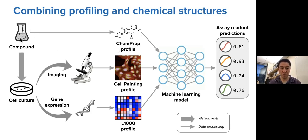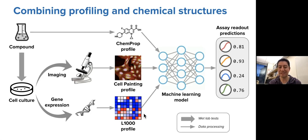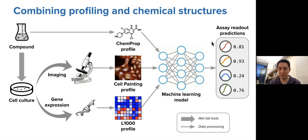To recap: we have compounds which we can apply to cell cultures to observe using the microscope via cell painting. We can also measure phenotypic activity using gene expression or transcriptional profiling and collect that data. Additionally, we can analyze the chemical structure directly using machine learning algorithms, and then learn a joint model to predict the activity of the molecule for specific assays.